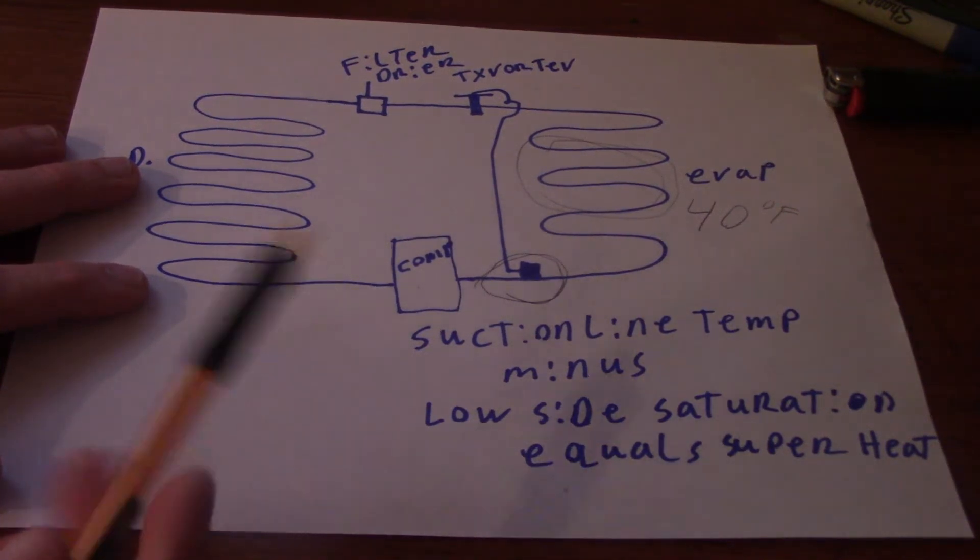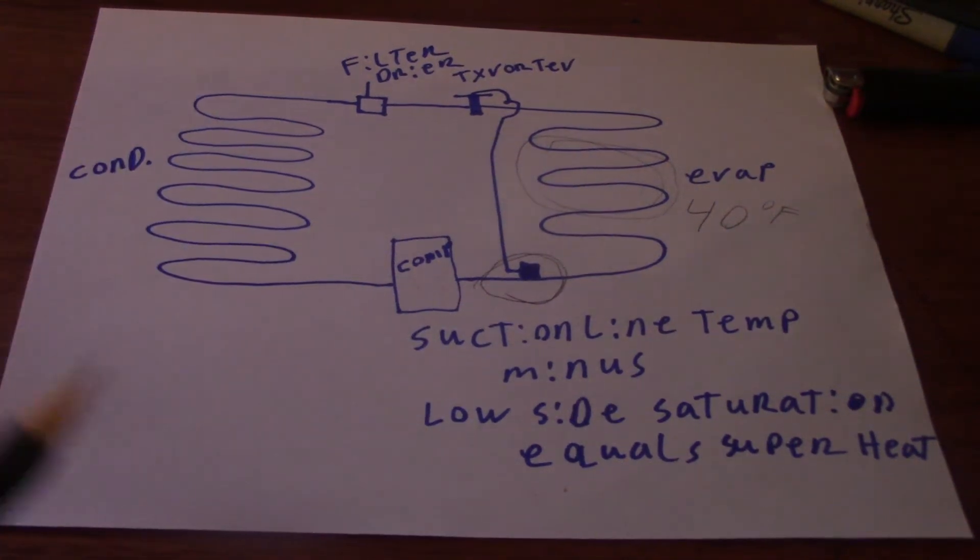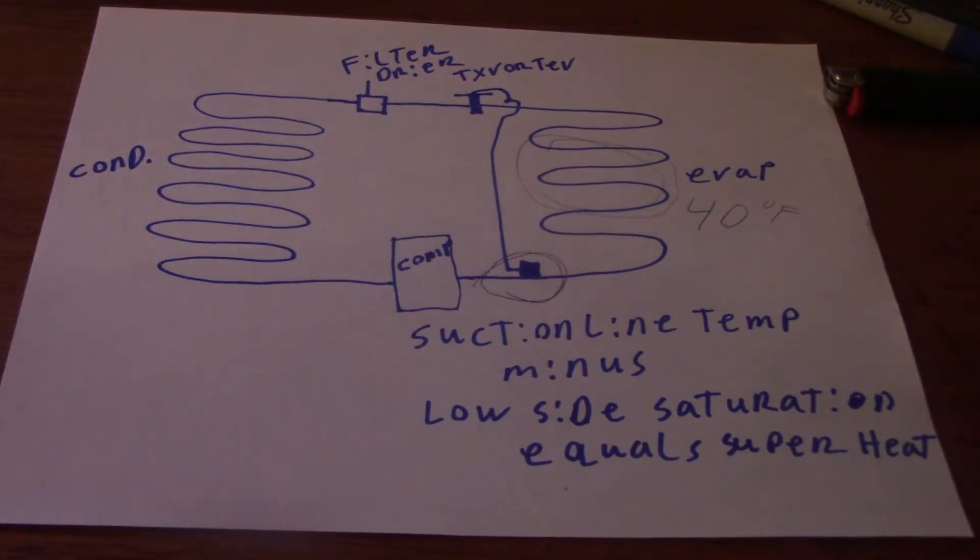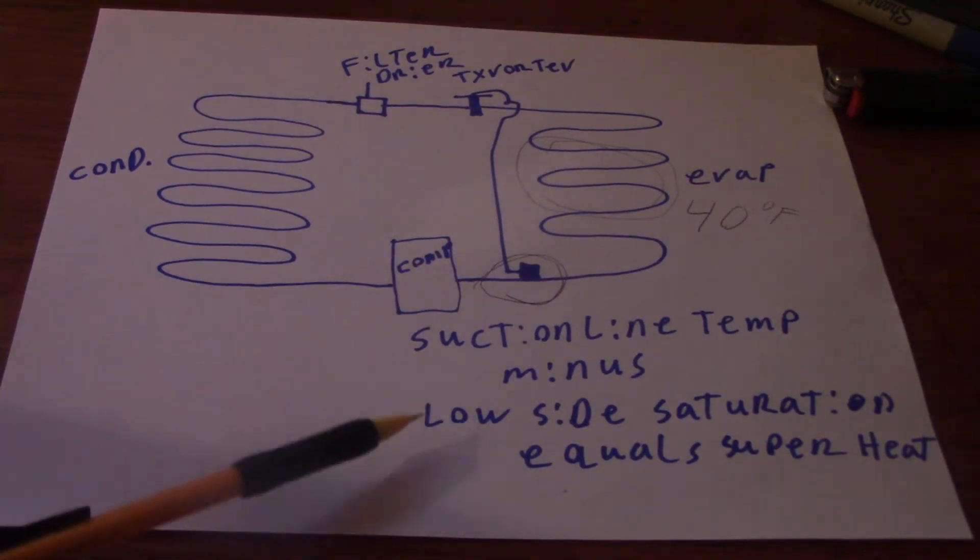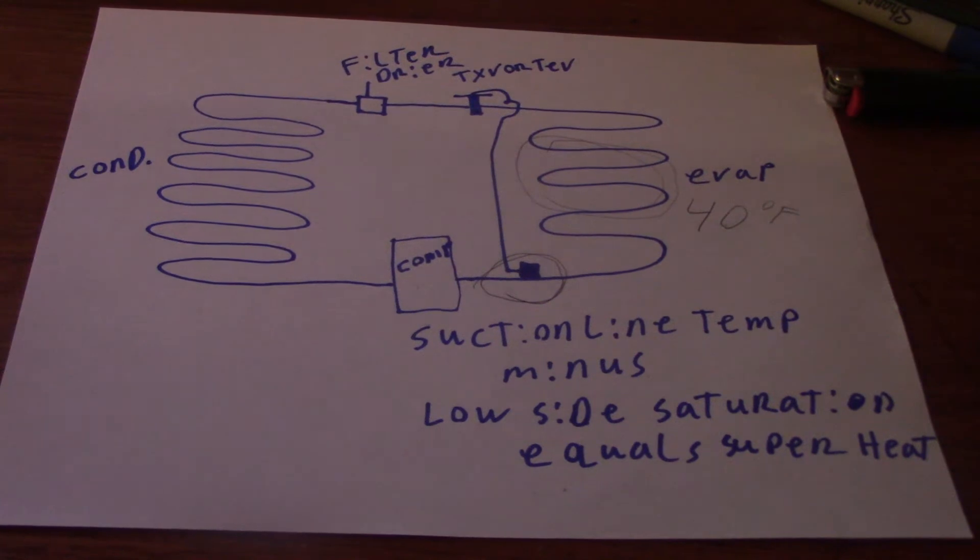All you're doing essentially when you calculate superheat is check the level of refrigerant in the system, if it's a cap tube or piston, or the TXV, verified TXV operation. It's important that you get the calculation right by doing a suction line minus low side saturation, as that's the formula. If you get it backwards, you can come up with a wrong number and you have no idea if the system's broke because you did the math wrong.